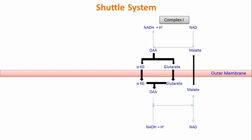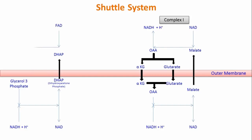The second shuttle system is the glycerol-3-phosphate/DHAP shuttle. Glycerol-3-phosphate accepts hydrogen ions and is converted into dihydroxyacetone phosphate (DHAP). DHAP travels from the cytoplasm into the mitochondrial matrix, where it hands the hydrogen ions to FAD, converting it to FADH2, and itself converts back to glycerol-3-phosphate, which is permeable to the outer membrane and returns to the cytoplasm. Because hydrogen ions are handed to FAD, they enter at complex 2 and produce less energy than the malate-oxaloacetate shuttle.